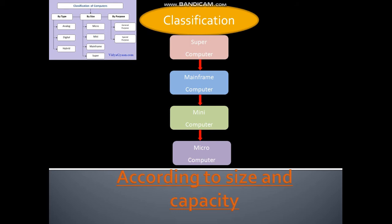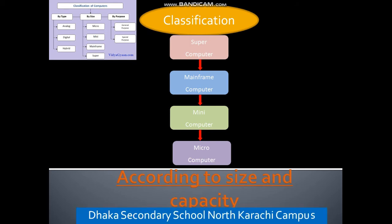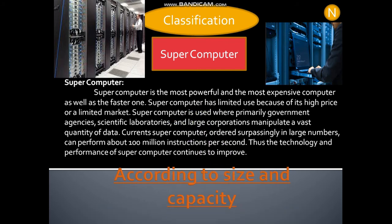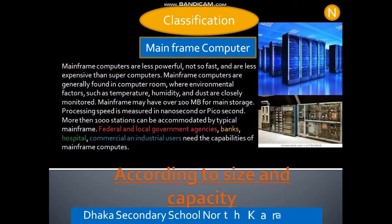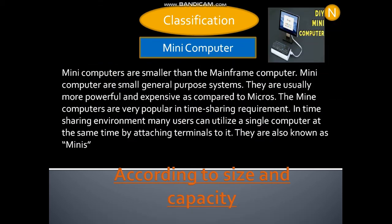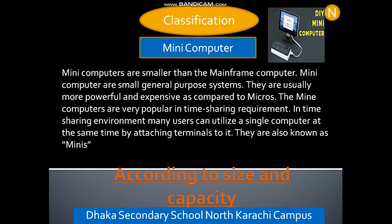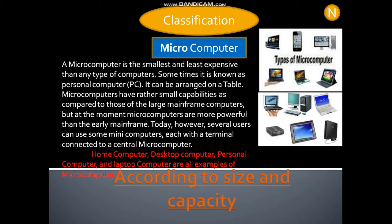According to size and capacity: the supercomputer is the most powerful, most expensive, and fastest computer. Mainframe computers are less powerful, not as fast, and less expensive than supercomputers; they are generally found in computer rooms. Mini computers are smaller than mainframe computers and are small general-purpose systems. The microcomputer is the smallest and least expensive type of computer, sometimes known as a personal computer (PC).